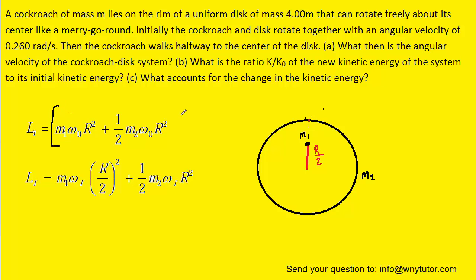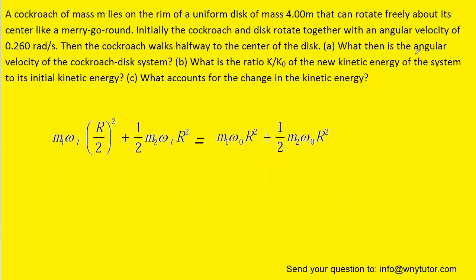Now, the conservation of angular momentum allows us to take the initial momentum and set it equal to the final momentum. Now, in part A, we're being asked to calculate the final angular velocity, which appears in this term as well as this one, so we can factor it out.